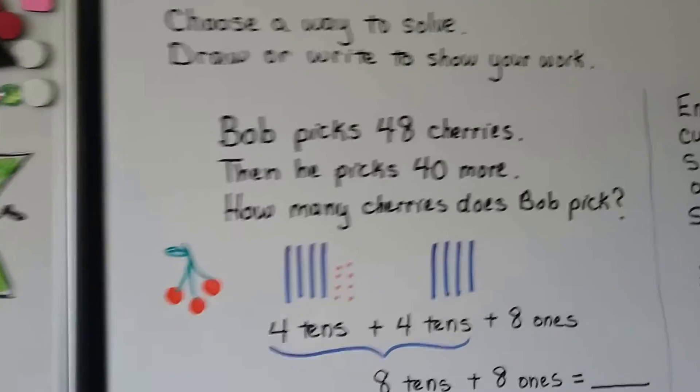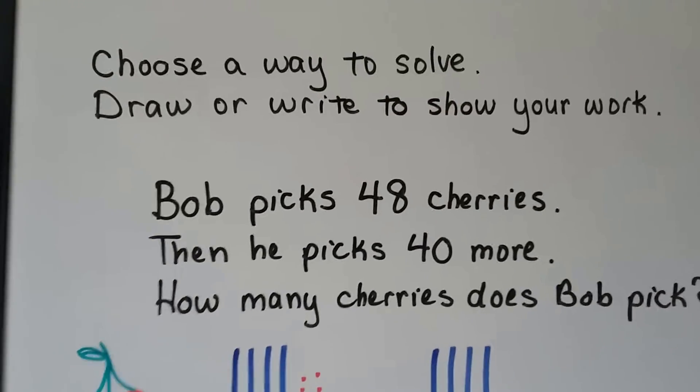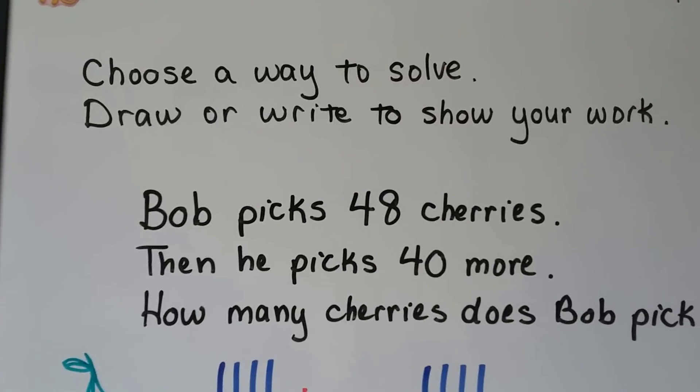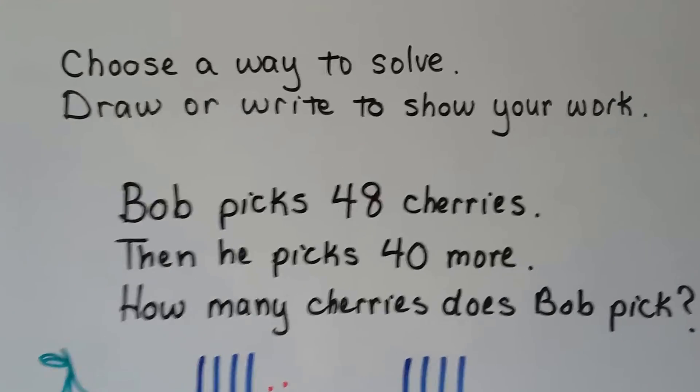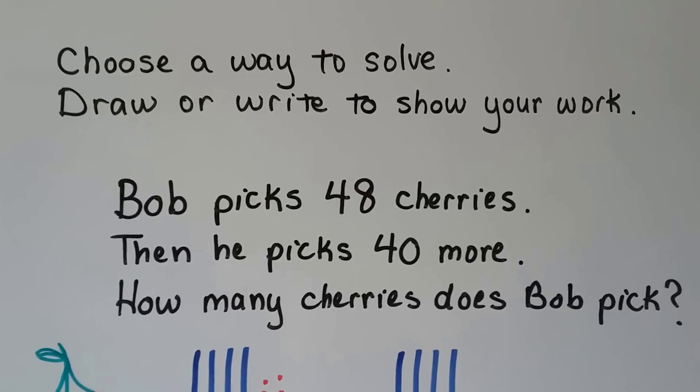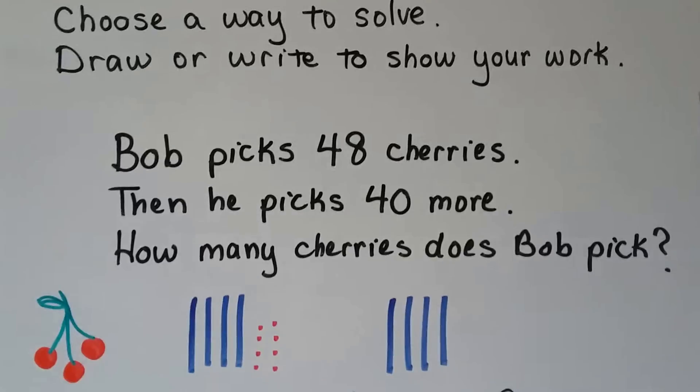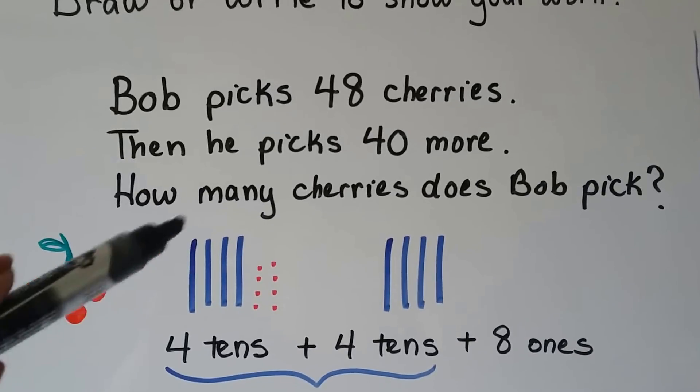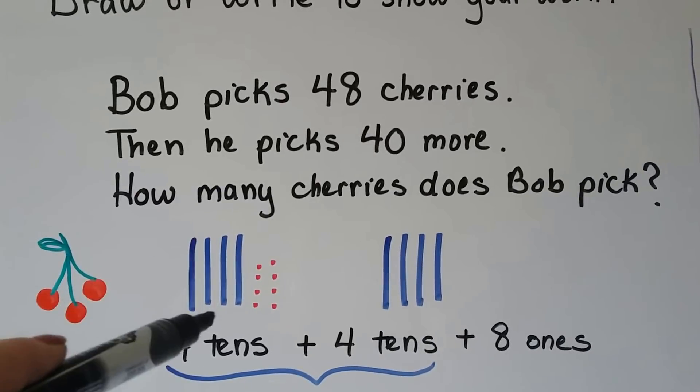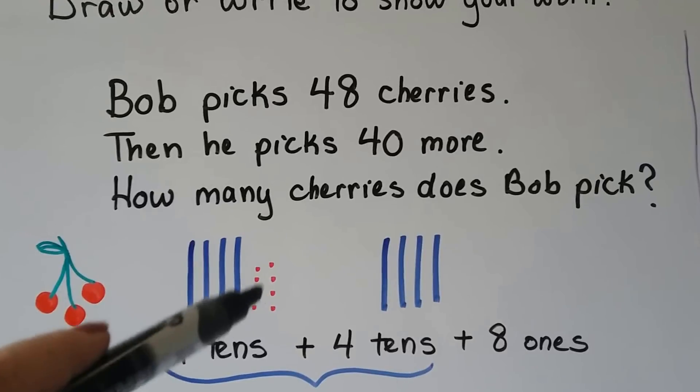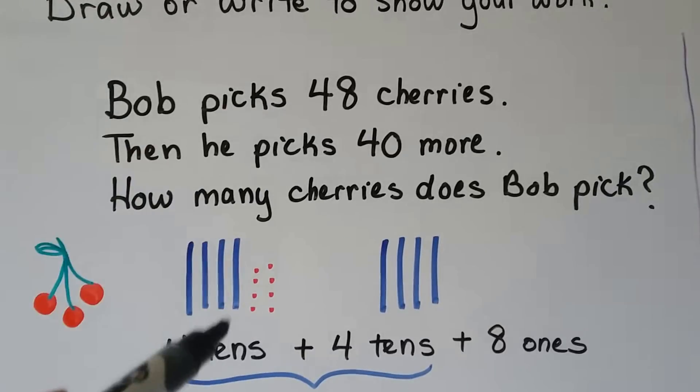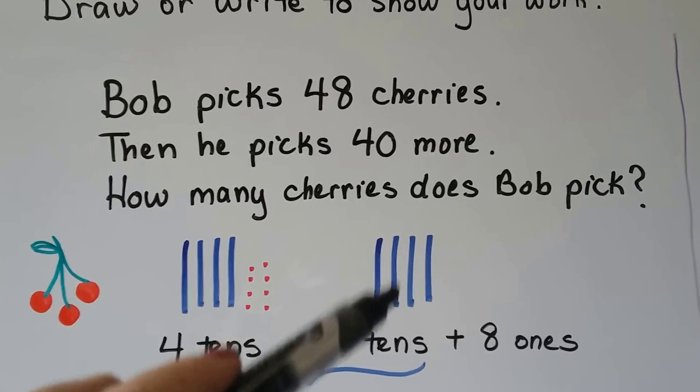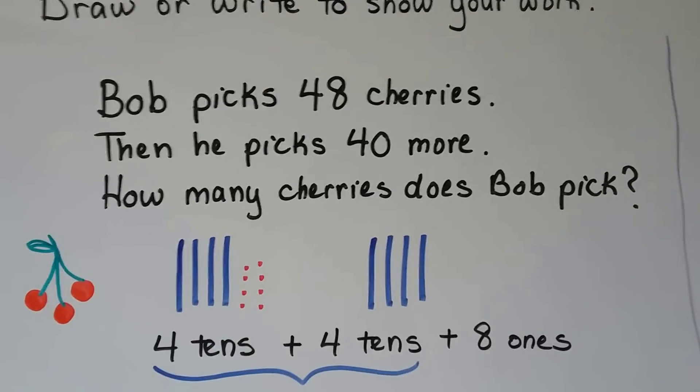Choose a way to solve, draw or write to show your work. Bob picks 48 cherries. Then he picks 40 more. How many cherries does Bob pick? So we can draw bars for the 4 tens and the 8 ones. We can put little dots for the 48. And we can draw 4 bars for the 40 more. 4 more tens.